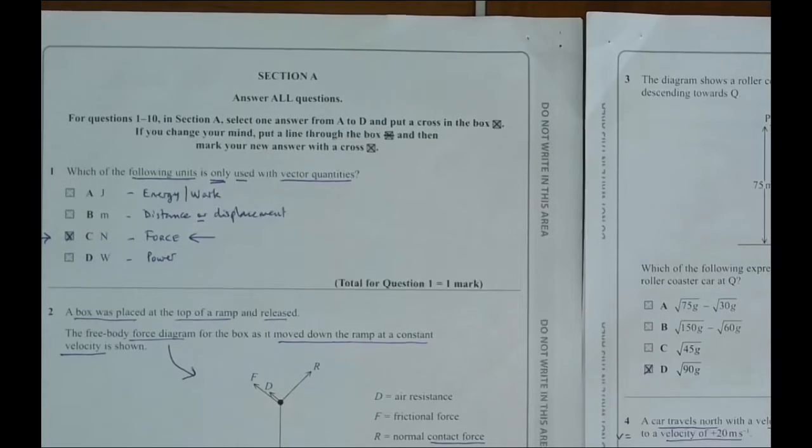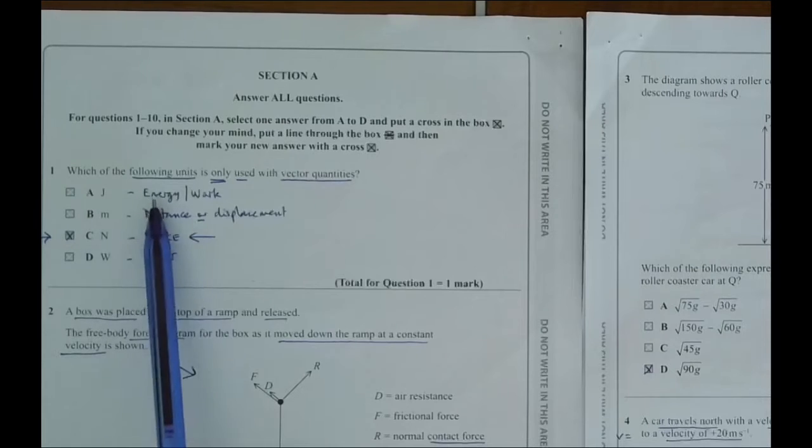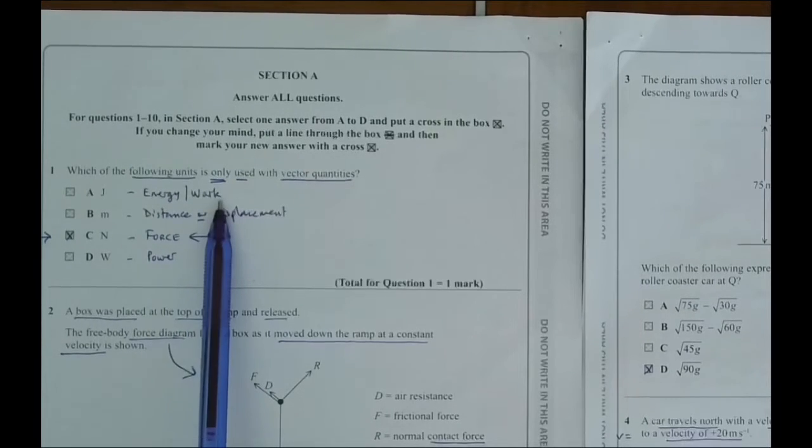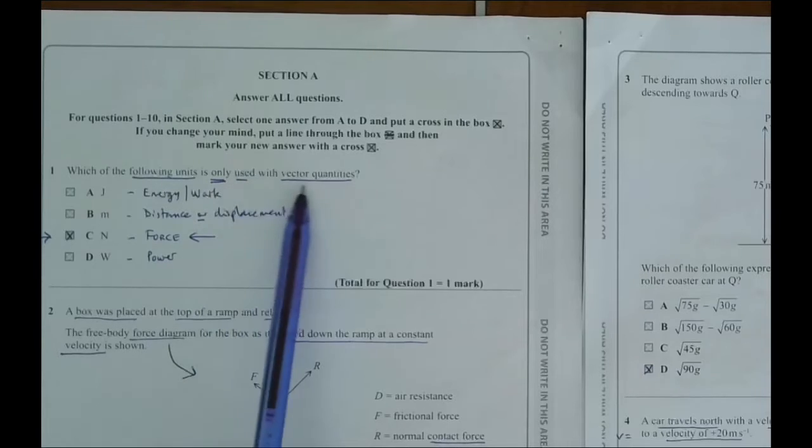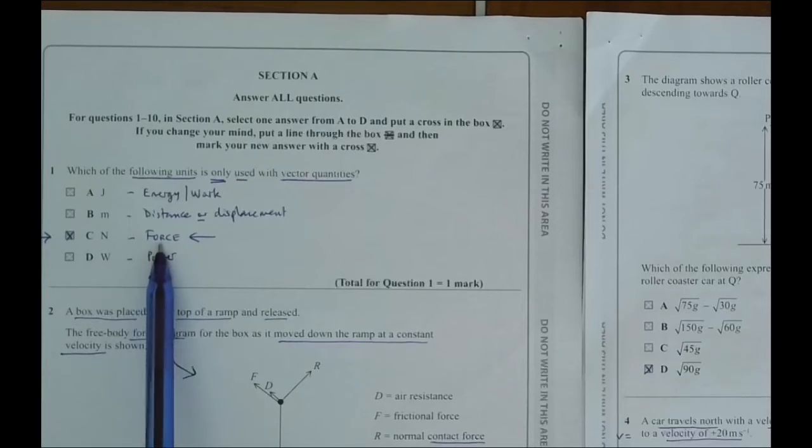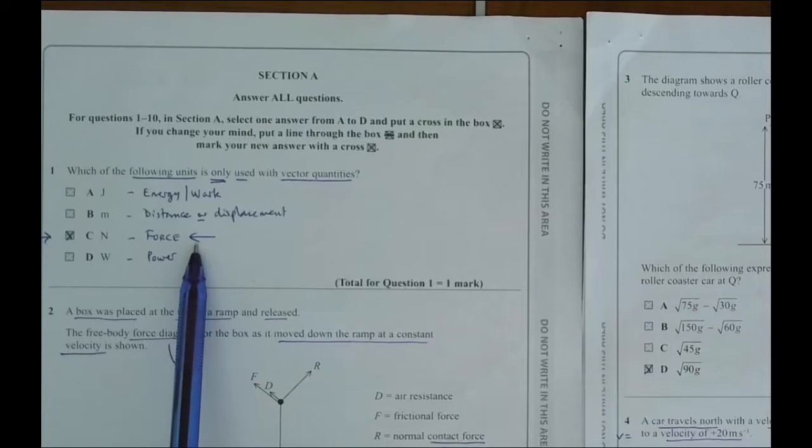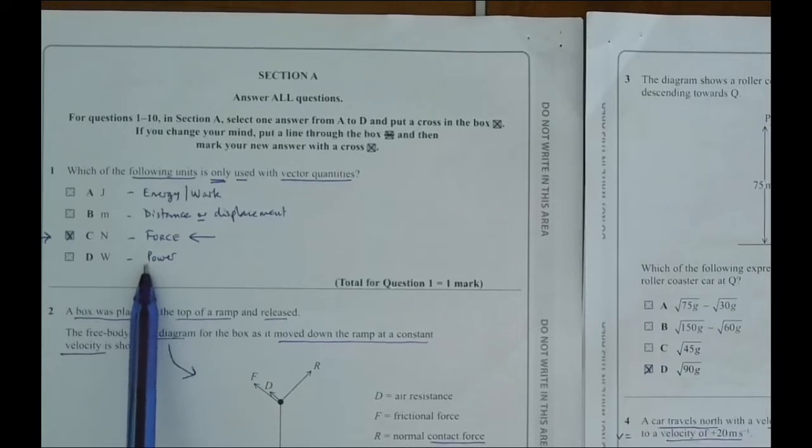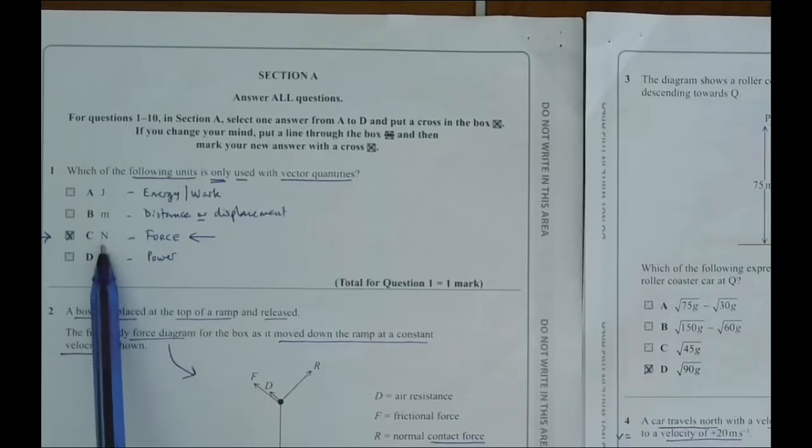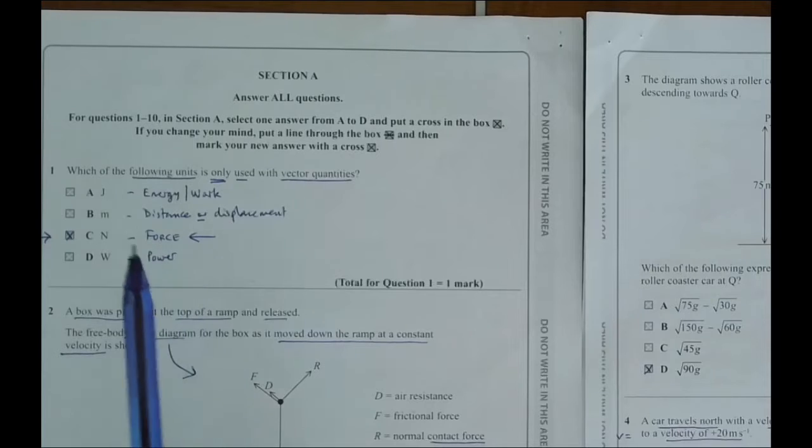I'll try and keep the videos to around 20 minutes if possible and then do repeat videos. So question one, it wants you to look at which of the following units is only used with vector quantities. The way I've written it out is that joules could be energy or work. They're scalar quantities, they have no direction involved. Meters could be displacement, which is a vector, but it could also be distance, so it's not only used with vector quantities. Newton is force, so that's obviously pointing to the right answer. Force is always a vector quantity.